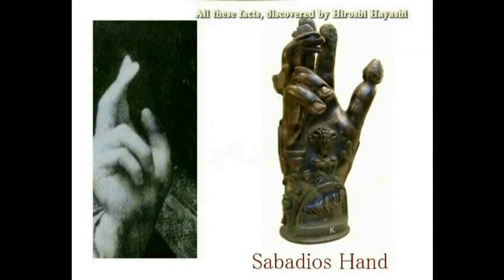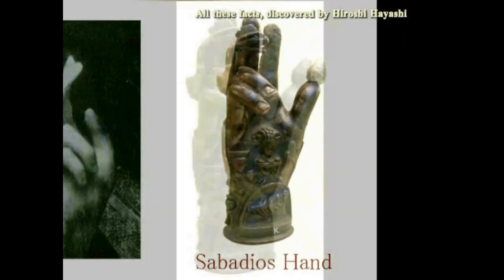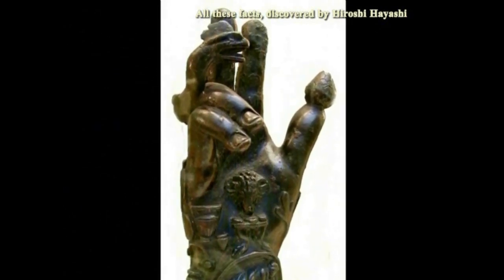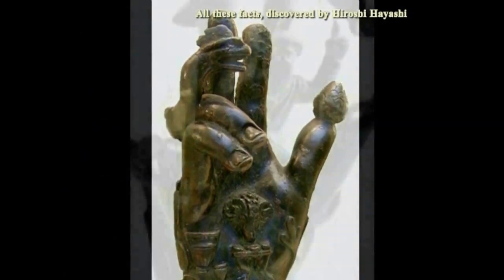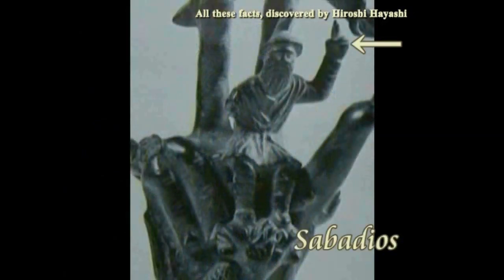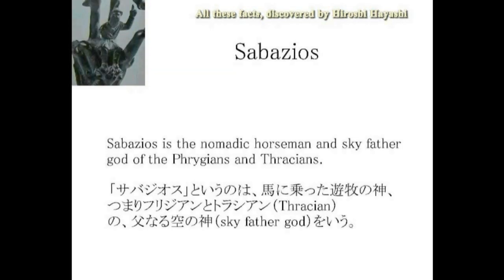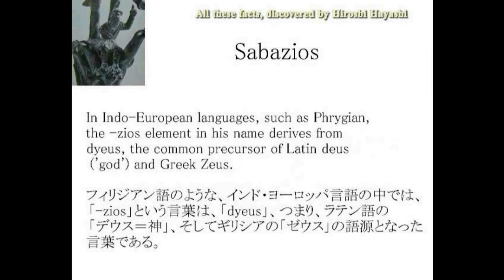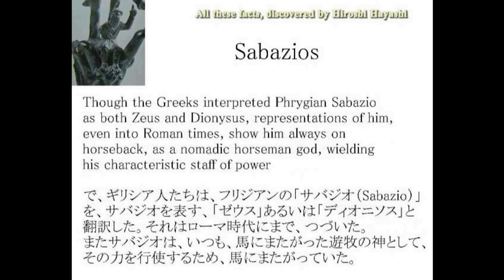右がサバジオスの手と言われているものです。指の間にヘビが絡んでいます。つまりイエスはサバジオスの手をこのように表現しているということになります。サバジオスというのは牧神の神であり、父なる空の神とも言い、ジオスというのはデュース、ギリシャ神話で言うゼウスに通じているというのです。